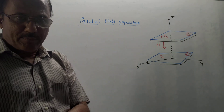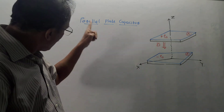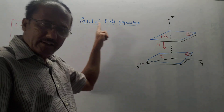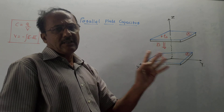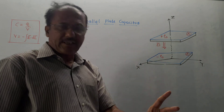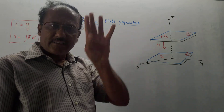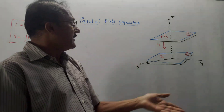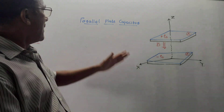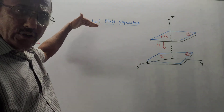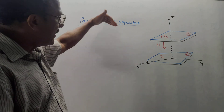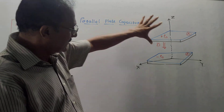As far as electromagnetics is concerned, there are three important types of capacitors. The first is the parallel plate capacitor, the second is the spherical capacitor, and the third is the cylindrical capacitor. Presently, we are talking about the parallel plate capacitor.